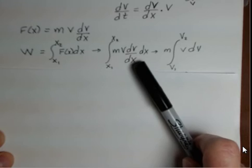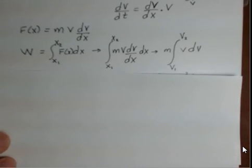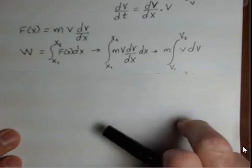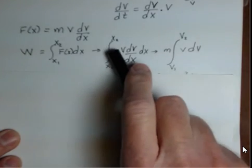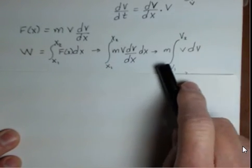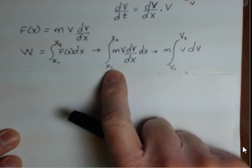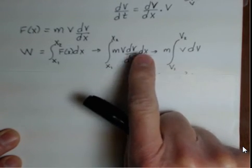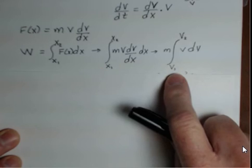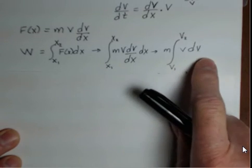The dx is cancelled. We end up with a velocity anti-derivative. So we have the mass is constant, that comes out in front of the anti-derivative, and we change the limits—instead of the x's that relate to dx, we change them to the initial and final velocity for the dv.